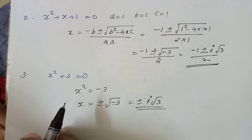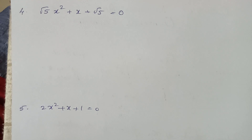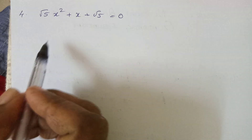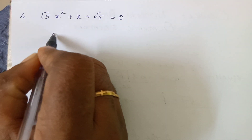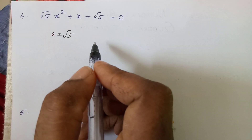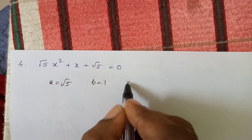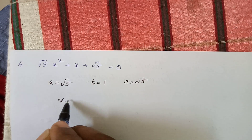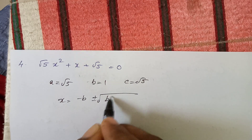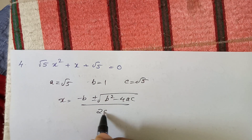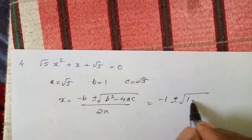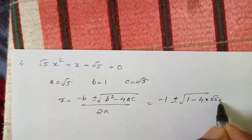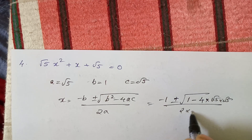In Exercise 5.3, we have questions to solve. For the equation with a equal to root 5, b equal to 1, c equal to root 5, x equals minus b plus or minus root of b squared minus 4ac divided by 2a. Substituting b equal to 1: x equals minus 1 plus or minus root of 1 squared minus 4 into root 5 into root 5, divided by 2 into root 5.